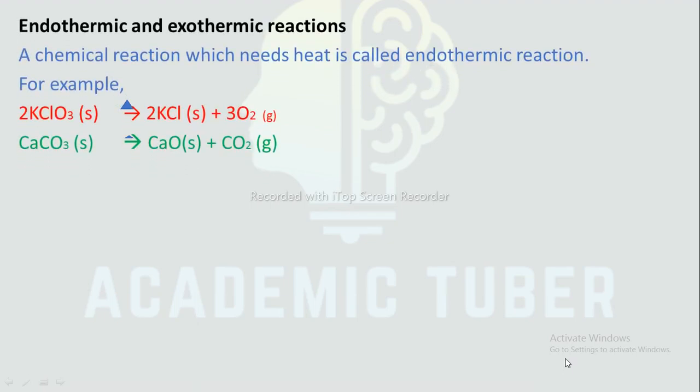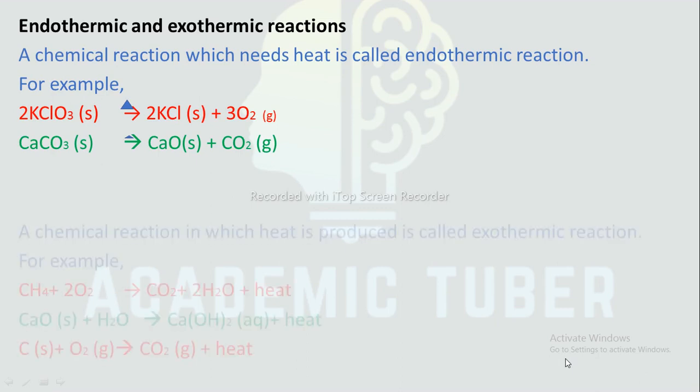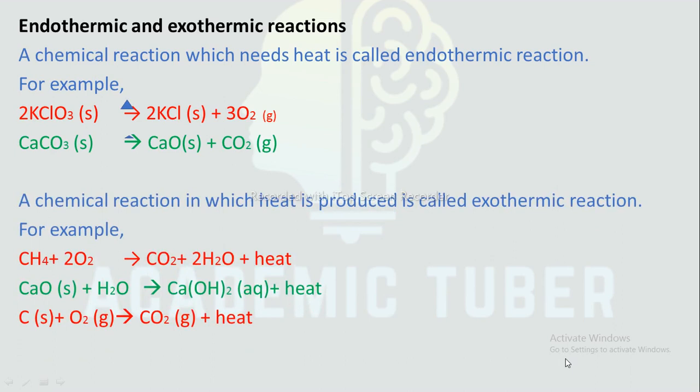Endothermic and exothermic reactions: A chemical reaction which needs heat is called an endothermic reaction. For example, 2KClO₃ on heating decomposes into 2KCl + 3O₂; calcium carbonate CaCO₃ on heating decomposes into CaO and CO₂. A chemical reaction in which heat is produced is called an exothermic reaction. For example: CH₄ + 2O₂ → CO₂ + 2H₂O + heat; CaO + H₂O → Ca(OH)₂ + heat. These were a few examples of exothermic reaction.